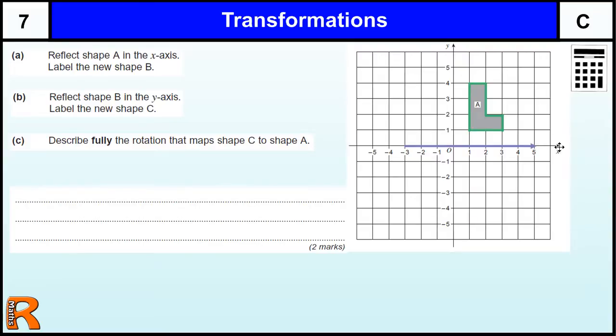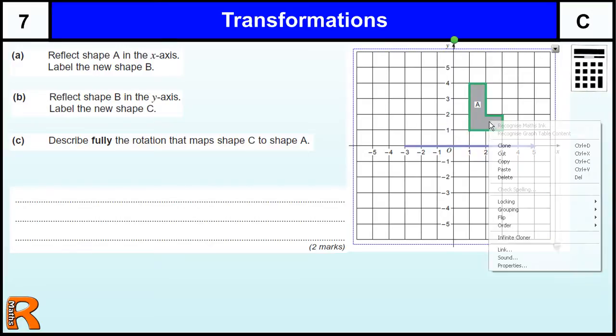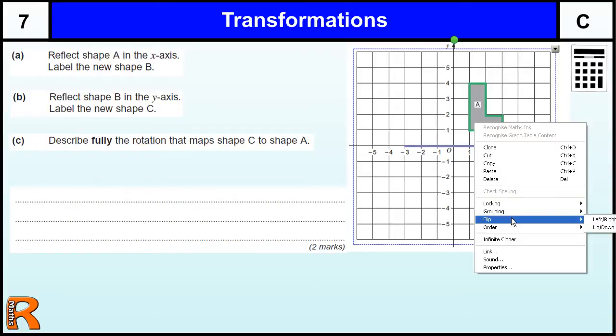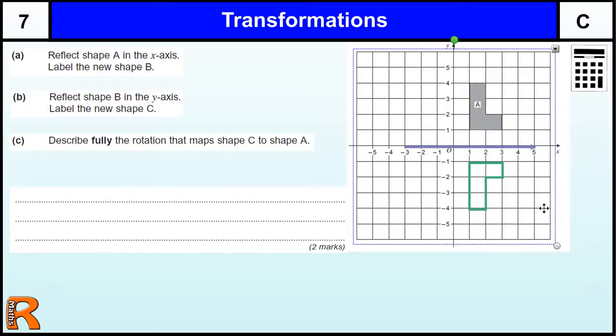draw on the line that you're going to reflect it in. The x-axis is this line across the crossways this way, and then if we reflect it by flipping it vertically, it's going to end up there.